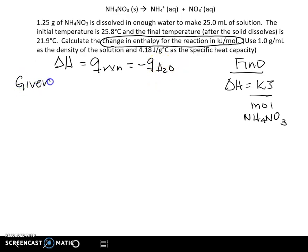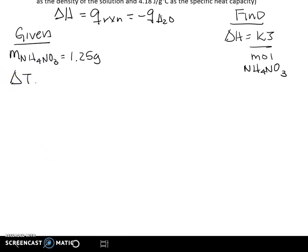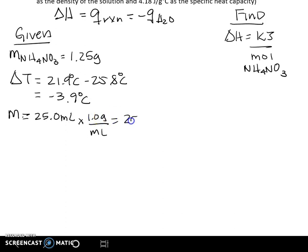So let's write what's given here first, just like we do in class. We're given the mass of our ammonium nitrate, NH4NO3, and that is 1.25 grams. We're given a temperature change, and our temperature change is 21.9 degrees C minus 25.8 degrees C. This is our T final, that's our T initial. So we have a change of minus 3.9 degrees C. And we're also given the mass of our solution, which we are going to relate it to water. This is going to be 25 mils. And we're assuming the density of water, so 1 mil is equal to 1 gram. So this is 25 grams.